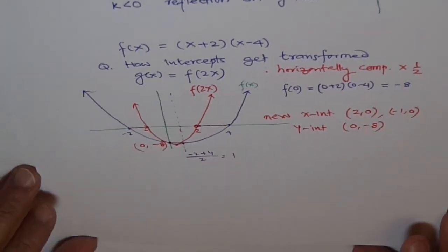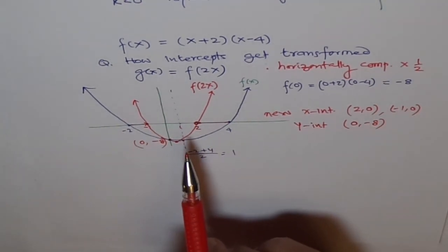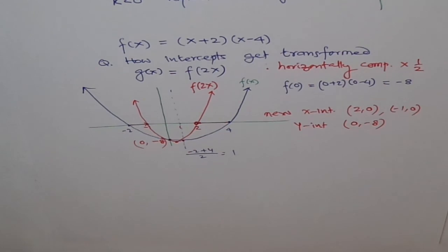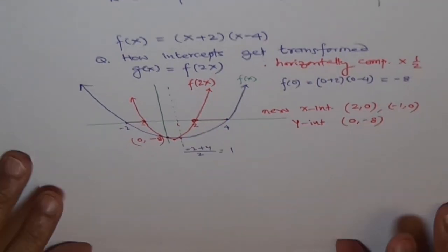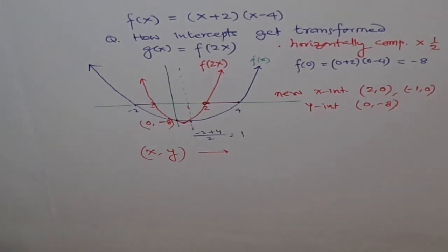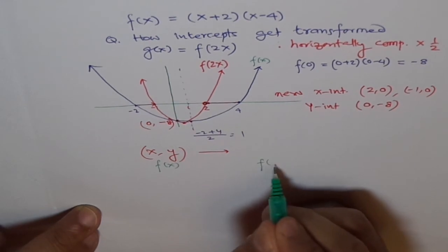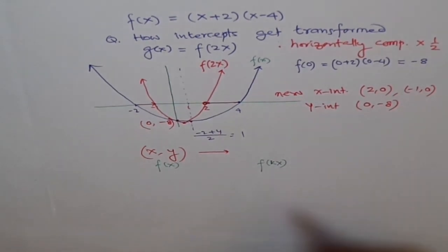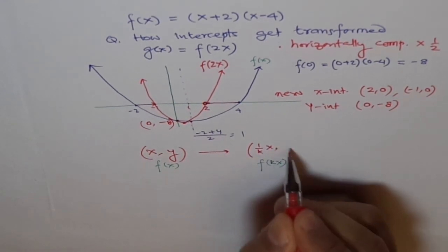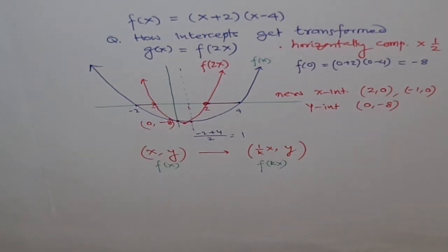This is a very interesting problem showing how intercepts get transformed when a function is horizontally stretched or compressed. You must have noticed: if (x, y) are original points on f(x), then on f(kx), only the x-points get changed — the new values are (1/k)·x — and the y-value remains the same. I hope this makes horizontal stretch and compression transformation much simpler and understandable. Try some more problems and see if you can do them. Thank you.